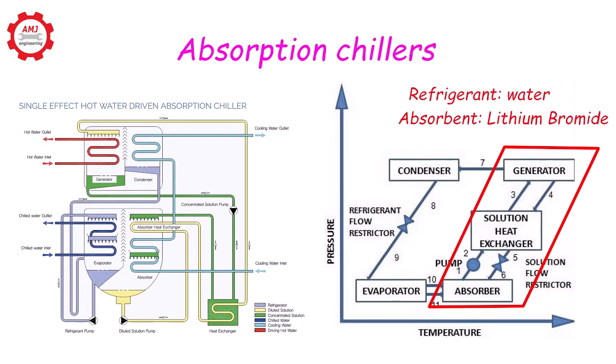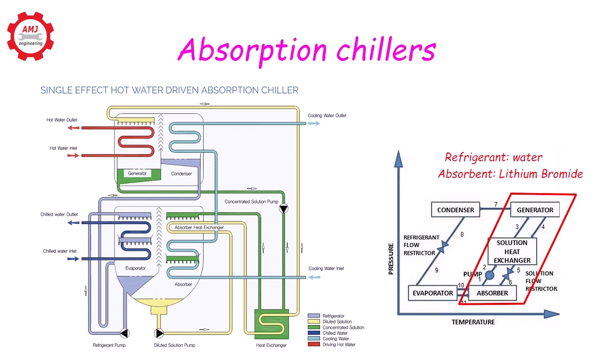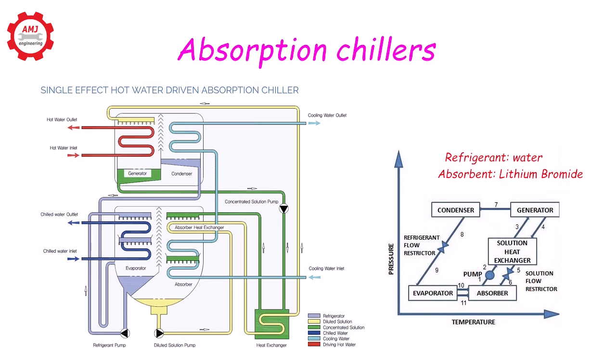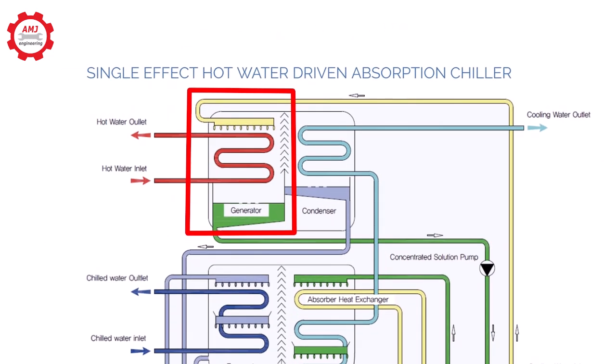The absorption cycle, illustrated here, can be summarized as follows. In the generator, gas, steam, or hot water is used to boil a solution of refrigerant-absorbent (water-lithium bromide). Refrigerant vapor is released and the absorbent solution is concentrated.